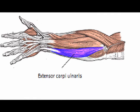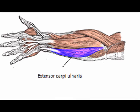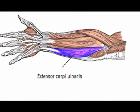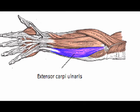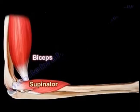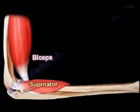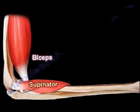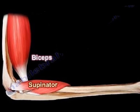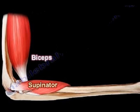Again, the superficial layer of the posterior forearm muscles consists of: the anconeus muscle, the brachioradialis, the extensor carpi radialis longus, the extensor carpi radialis brevis, the extensor carpi ulnaris, the extensor digitorum, and the extensor digiti minimi. While the deep layer consists of: the abductor pollicis longus, the extensor indicis, the extensor pollicis longus, the extensor pollicis brevis, and the supinator muscle.